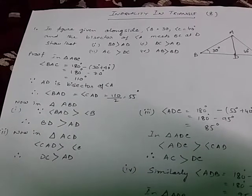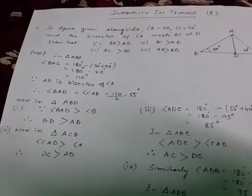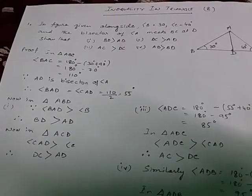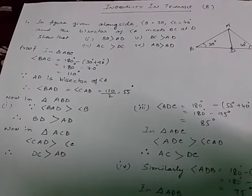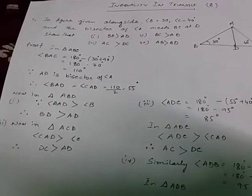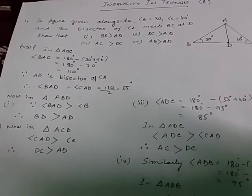So in triangle ABC, angle BAC is not given. So angle BAC is equal to 180 minus 30 plus 40. So angle BAC is 110. Since AD is bisector of angle A, therefore angle BAD is equal to angle CAD is equal to 110 divided by 2, which is 55.